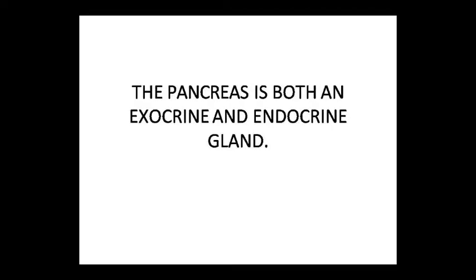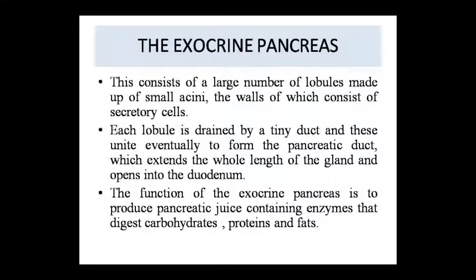Now the pancreas — as we have said, it acts as both exocrine and endocrine glands. Until now we have studied the anatomical portion of the pancreas. The exocrine pancreas consists of a large number of lobules. These lobules are made of small acini, and their walls are made of secretory cells. Each lobule is drained by tiny ducts, which together form the pancreatic duct extending through the whole gland.